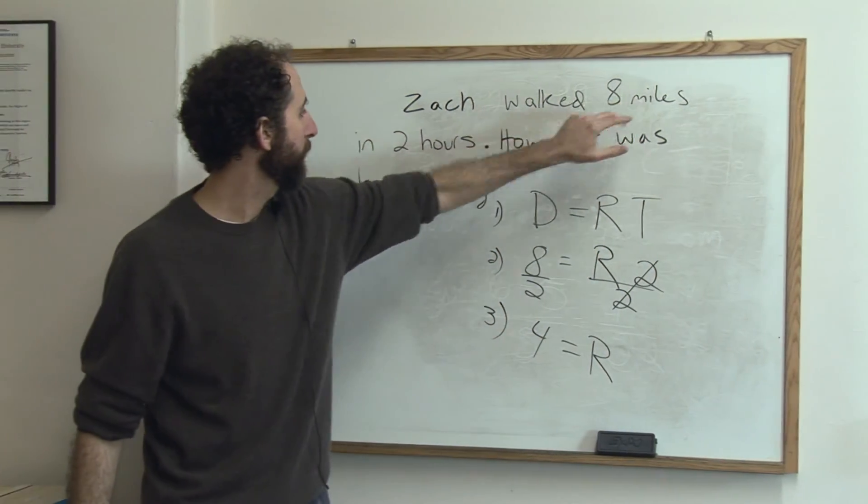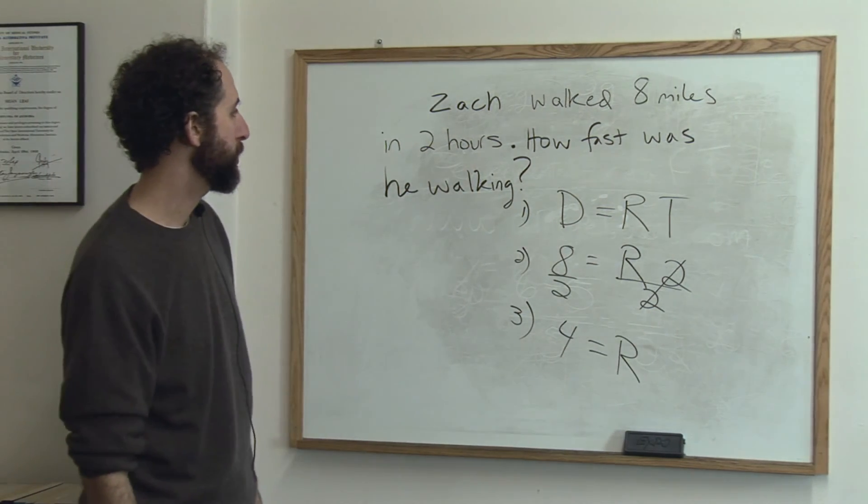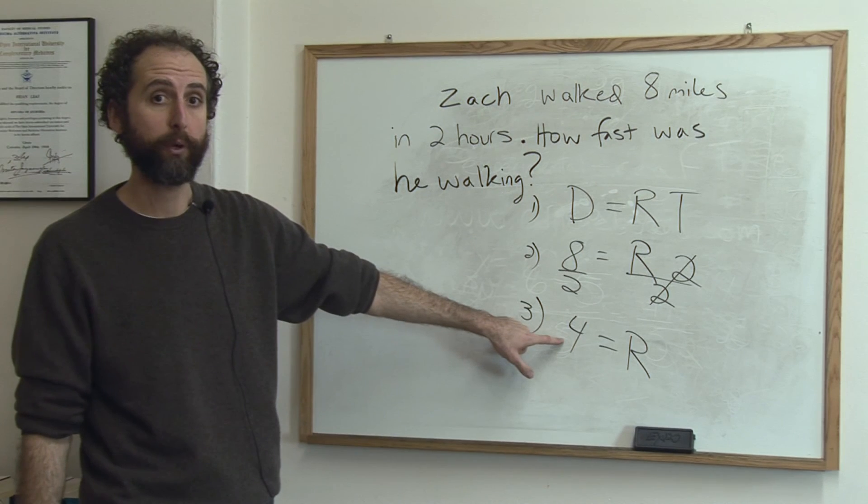For what? Four miles per hour. So in this question, Zach walked eight miles in two hours. How fast was he going? He was going four miles per hour.